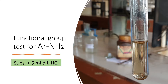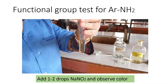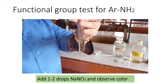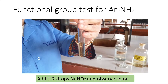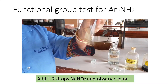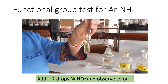Students often make the mistake of adding too small a quantity of HCl. Remember to add a sufficient quantity of HCl so that the substance will dissolve. Now to this we add 1–2 drops of NaNO₂ using a Pasteur pipette. A common mistake here is adding a large quantity of NaNO₂ — don't make that mistake, otherwise it will spoil your test.